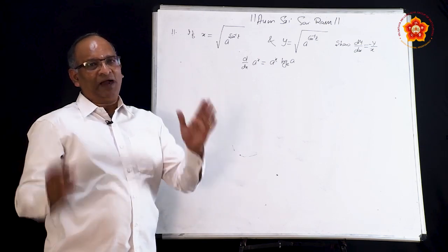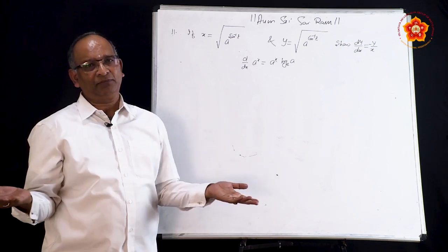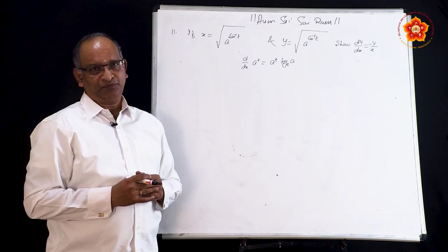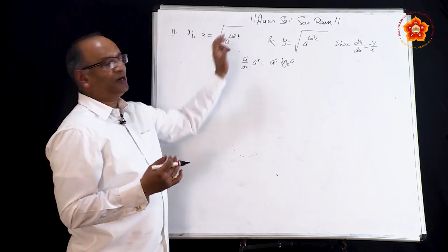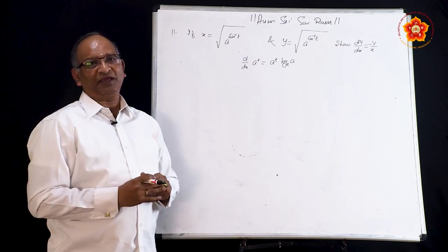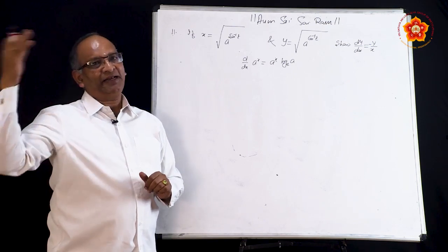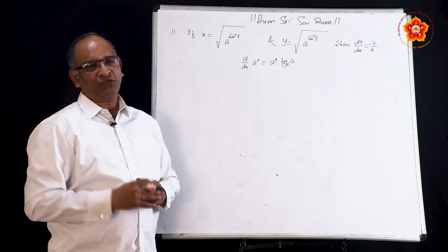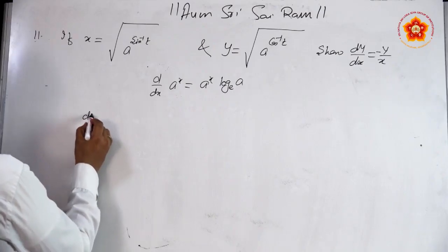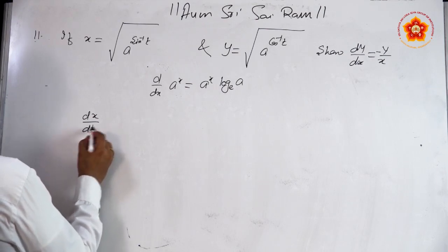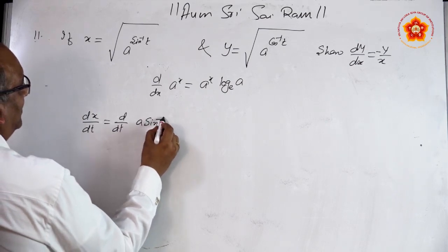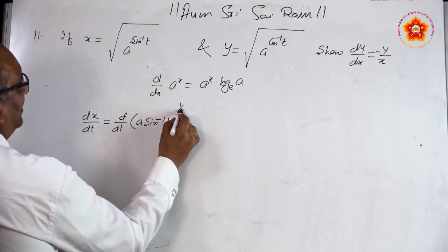How do we deal with this? Whatever is inside the square root, take it as u and find the derivative of √u. When finding the derivative of a^(sin⁻¹t), take sin⁻¹(t) as v and write the derivative of a^v, then find the derivative of sin⁻¹(t), which is a standard formula. That makes it very simple. So, dx/dt equals d/dt of [a^(sin⁻¹t)]^(1/2).